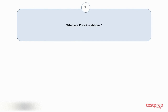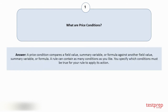Question number one: What are price conditions? A price condition compares a field value, summary variable, or formula against another field value, summary variable, or formula. A rule can contain as many conditions as you like. You specify which conditions must be true for your rule to apply its action.